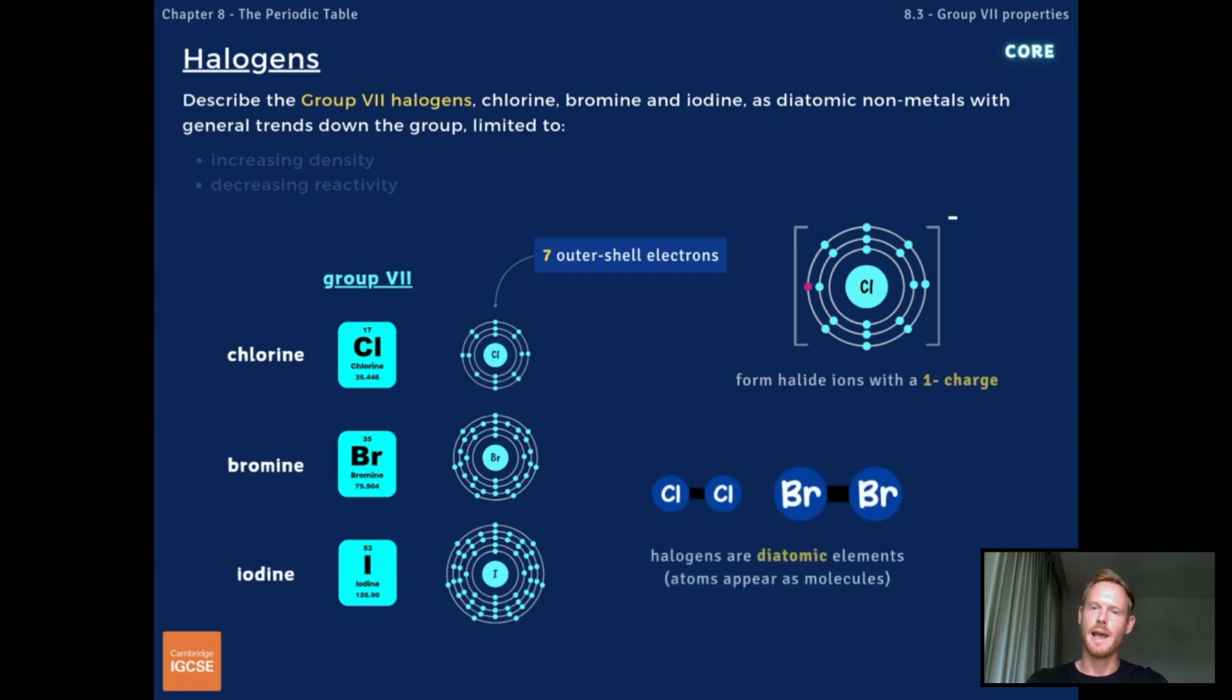The halogens are diatomic elements, meaning that in their uncombined state, their atoms appear in pairs. Chlorine then is written Cl2 and bromine Br2.